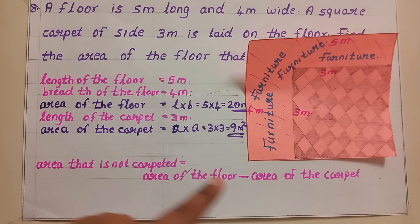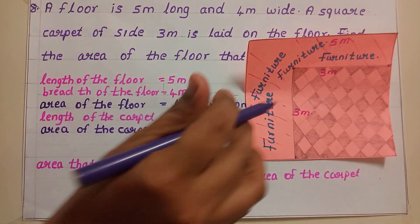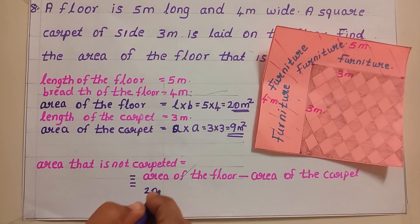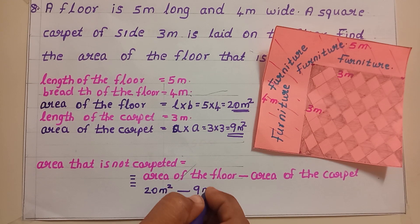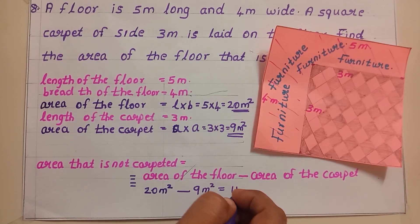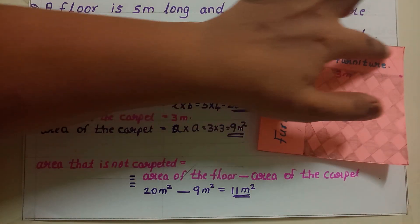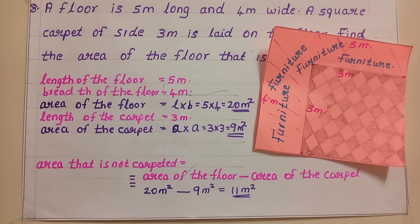Now we got both things — area of the floor and area of the carpet. Substituting the values: area of the floor is 20 meter square, minus area of the carpet is 9 meter square. Our final answer is 11 meter square. So the area that is not carpeted — that shaded portion — is 11 meter square. I hope you enjoyed my class. If you like my video, please like, share and subscribe, and support me. Signing off, Femi Bijoy from Axe Ninjas.